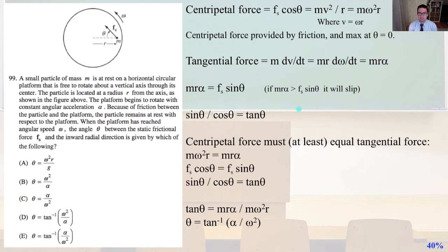So sine theta over cosine theta, we need to remember, equals tan, the tangent of theta. So the centripetal force must at least equal the tangential force, where mω²r equals mrα. So F_s cosine theta equals F_s sine theta, and so sine theta over cosine theta, remember, equals tan theta. So tan theta equals mrα over mω²r, and let's do some algebra. Theta equals tan⁻¹, divided each side by tangent. Theta equals tan⁻¹. Quantity alpha divided by ω squared, and that is answer E.